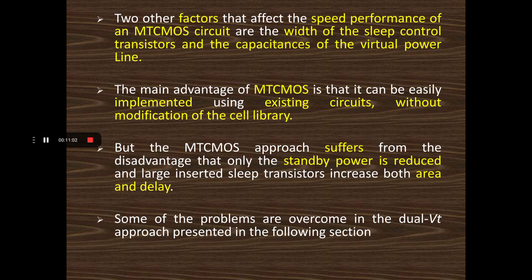The main advantage of the MTCMOS circuit is that it can be easily implemented without changing the existing circuit behavior. In VTCMOS, we had to apply different biasing voltages to internal layers and modify the circuit. That complexity is not present in MTCMOS, because MTCMOS only adds two sleep transistors — a PMOS and an NMOS — to the existing circuit. Therefore, no circuit alteration is required.